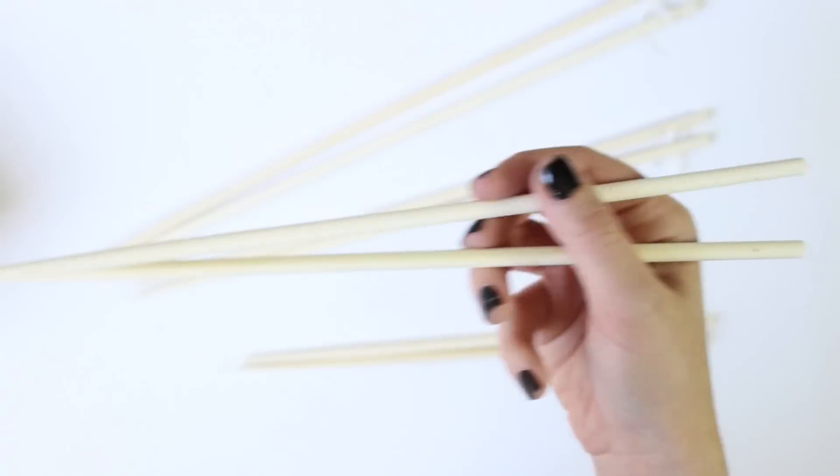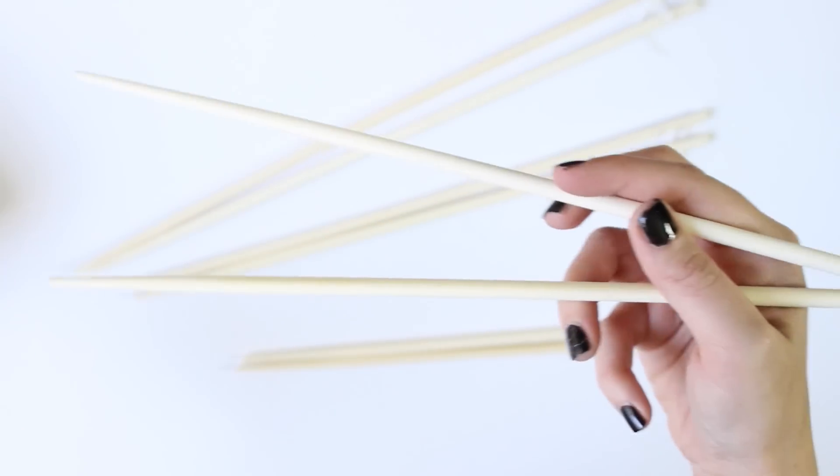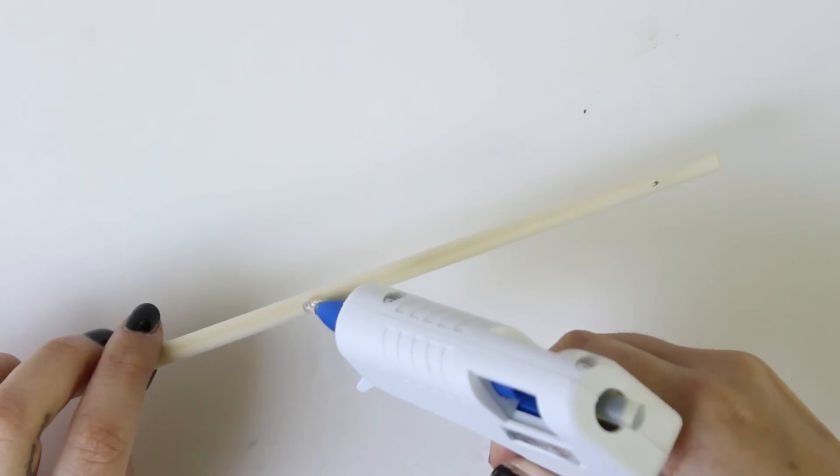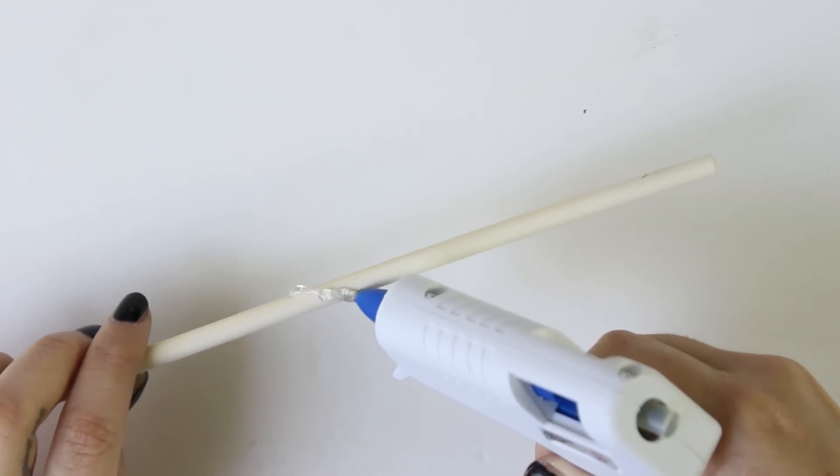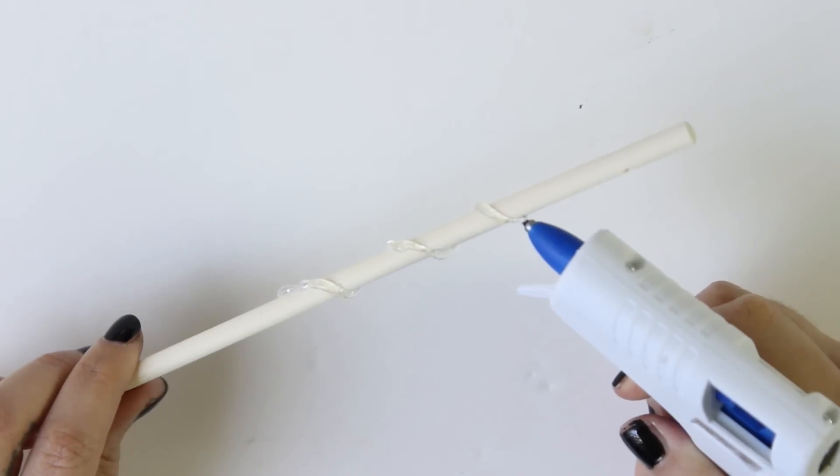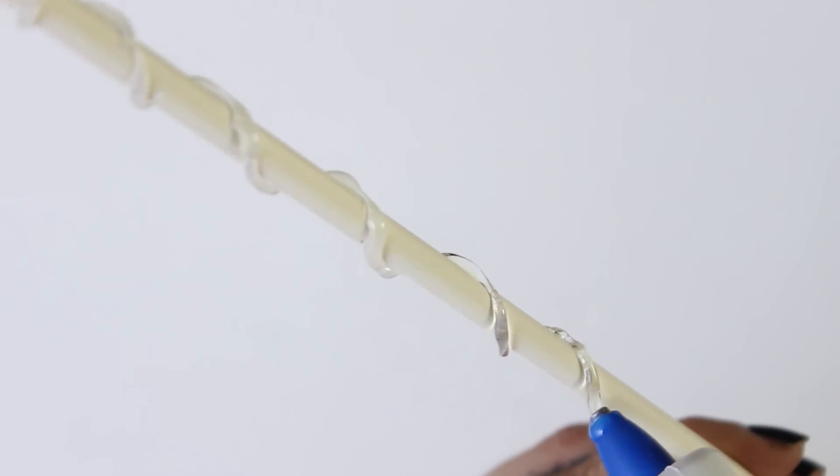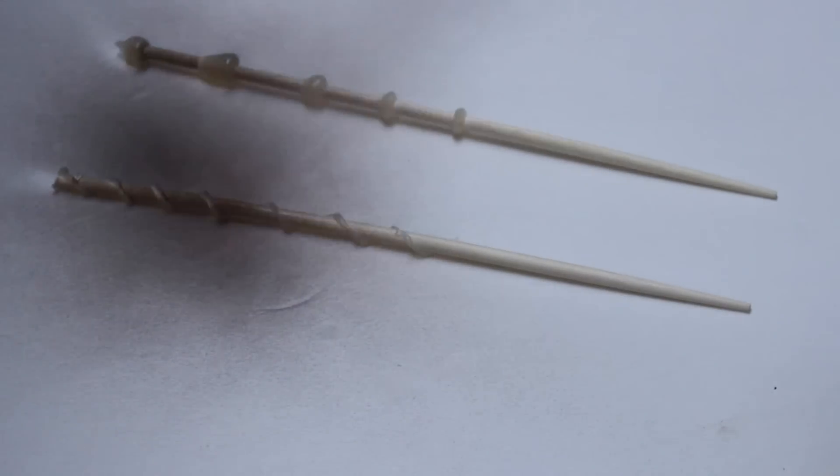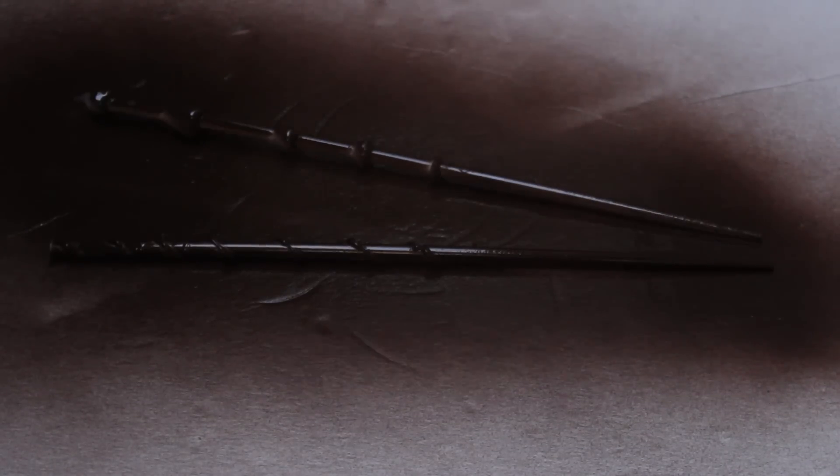Then I made a wand. The best thing to make a wand is to use chopsticks and decorate them with a little bit of hot glue. You can make any design you want. I decided to make this spiral design. When the glue is completely dry you can spray paint your wand, and this is the final result.